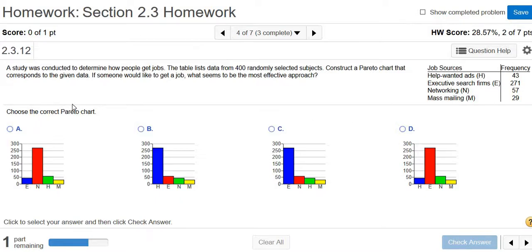Okay, so we have to construct a Pareto chart using this information here. A Pareto chart is a bar graph where the biggest bar always comes first. So it has to be either B or C, and the bars have to be in decreasing order.